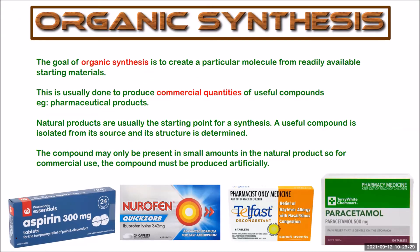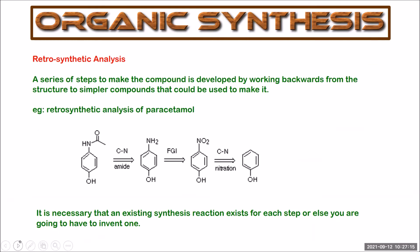The goal of organic synthesis is to create a particular molecule from readily available starting materials. Natural products are usually the starting point — the useful compound is extracted, isolated, and its structure is determined. That compound might only be present in small amounts, so for commercial use you need to produce it artificially. Discovering how to synthesize a natural product can make you a lot of money. Once you've determined the structure of your useful molecule, you need to work backwards into simpler compounds — this is called performing a retrosynthetic analysis.